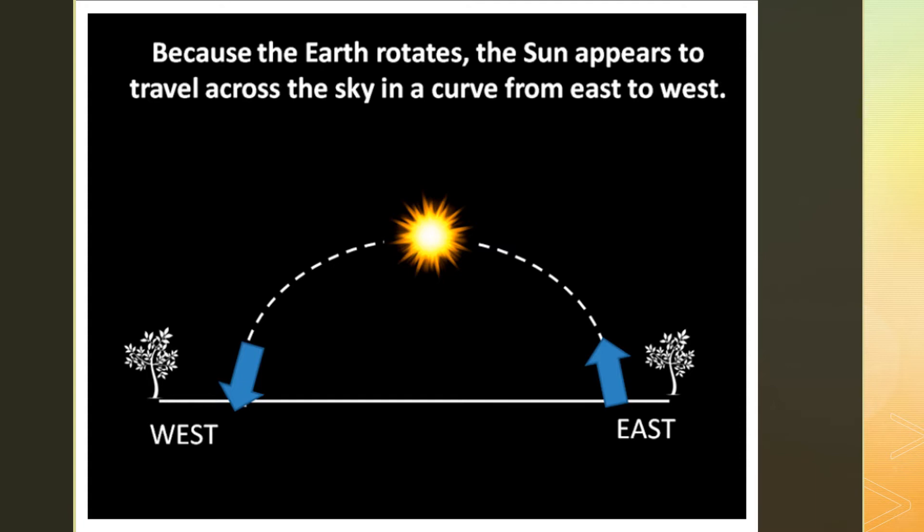Ancient people worshipped the sun for its heat and light. However, they feared winter when the lack of sun brought death and despair. Today, we know the Earth rotates, giving the illusion that the sun rises in the east and sets in the west. The sun also appears to move in a curved rather than straight line as it slowly moves from east to west.